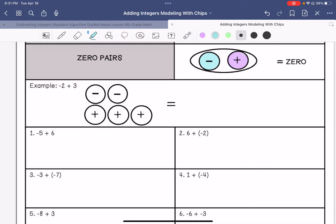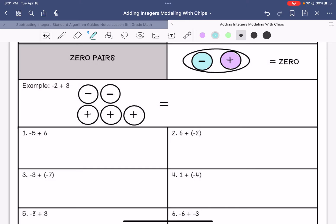Here's our example. We have negative two represented by two negative chips, and then we have positive three represented by three positive chips. And then we're going to see if we can make any zero pairs. So we can make a zero pair here, so that becomes zero, and another pair here, that becomes zero.